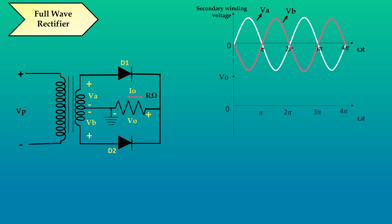During 0 to pi, the diode D1 acts as short circuit and D2 acts as open circuit. Therefore, load voltage is equal to Va.